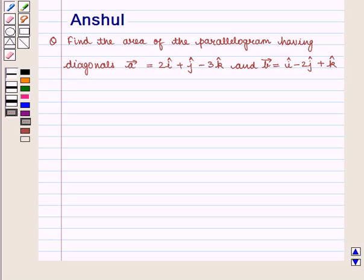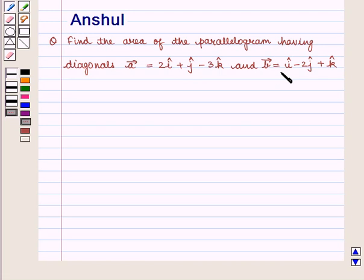Hello and welcome to the session. In this session we are going to discuss the following question: Find the area of the parallelogram having diagonals Vector A equal to 2i cap plus j cap minus 3k cap, and Vector B equal to i cap minus 2j cap plus k cap.